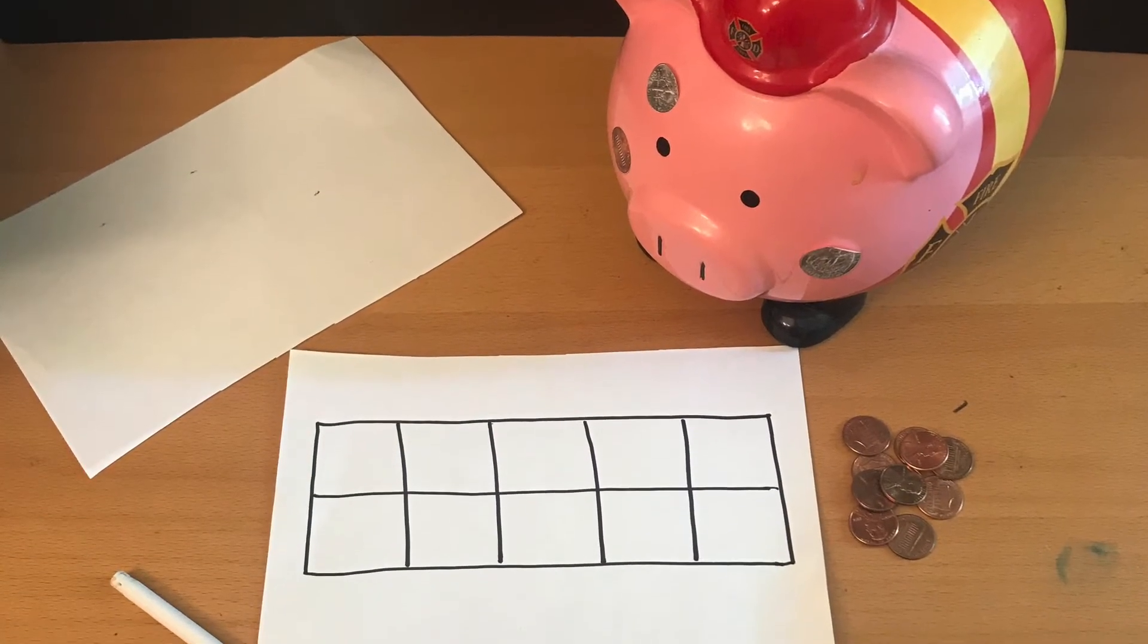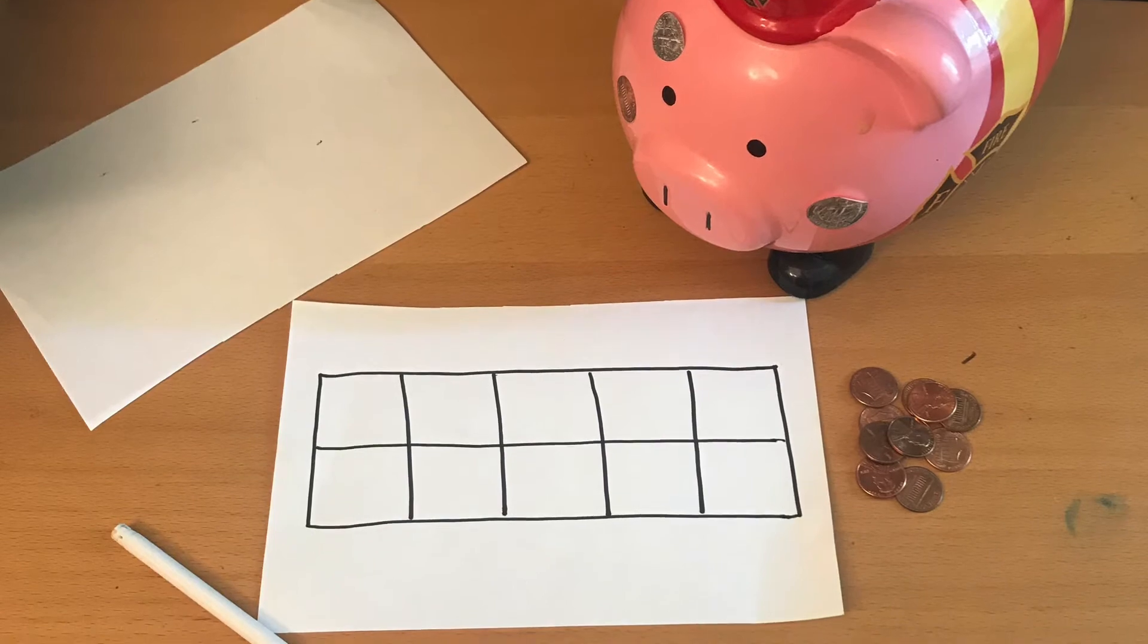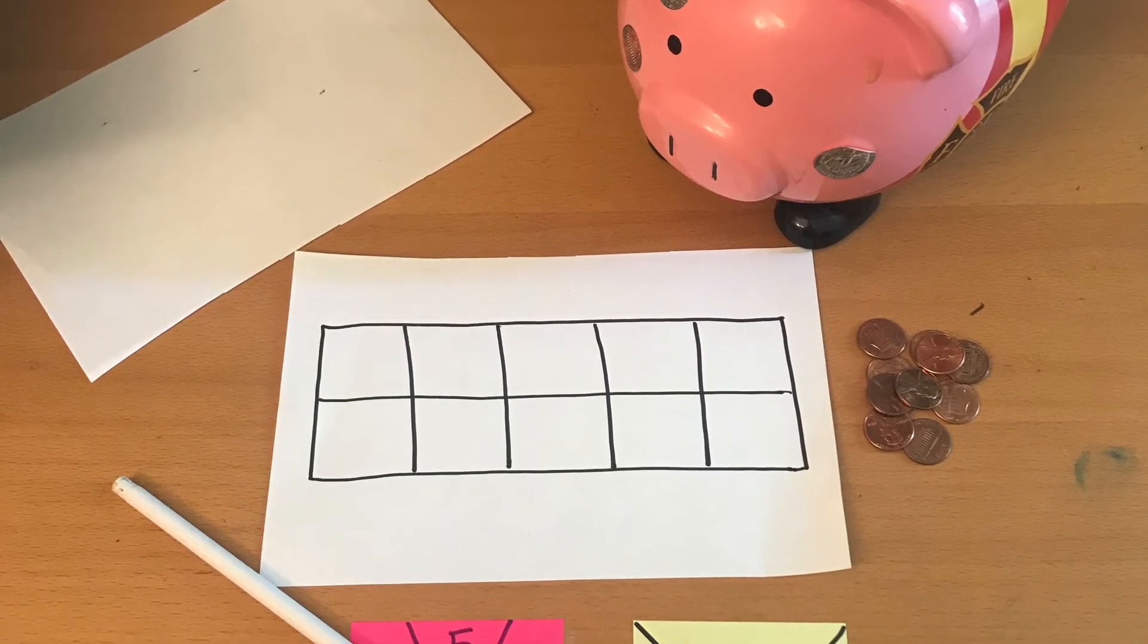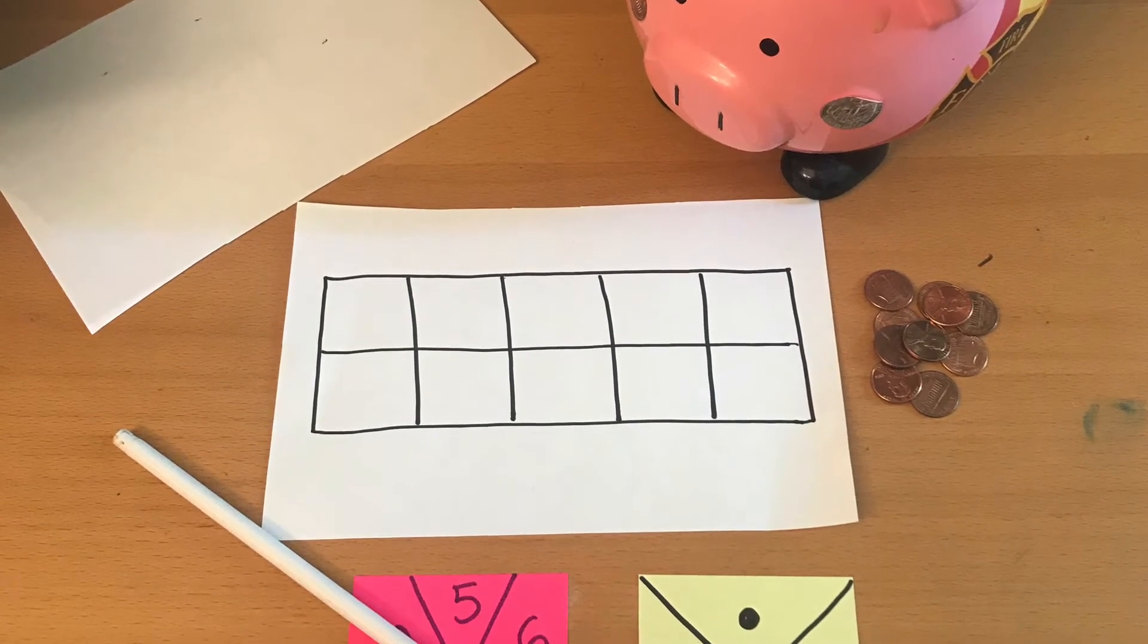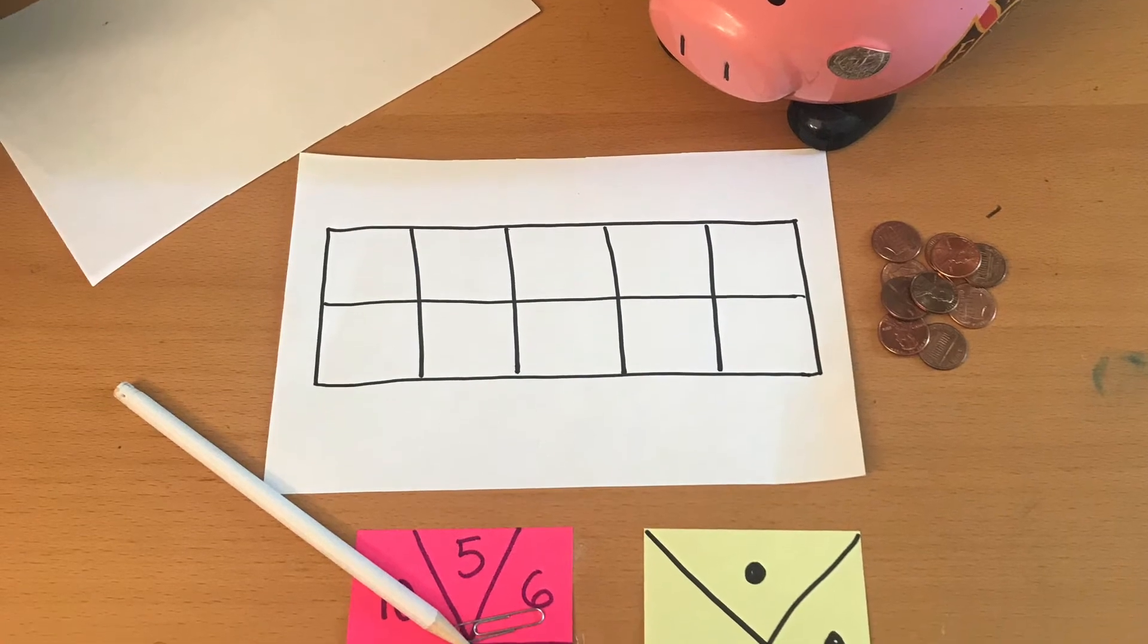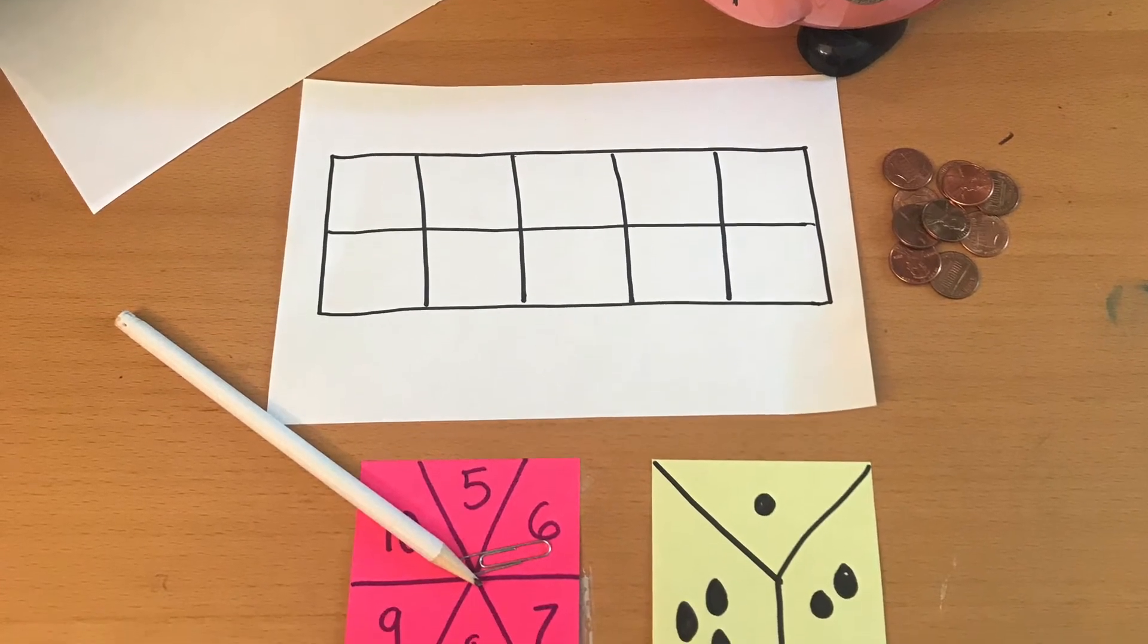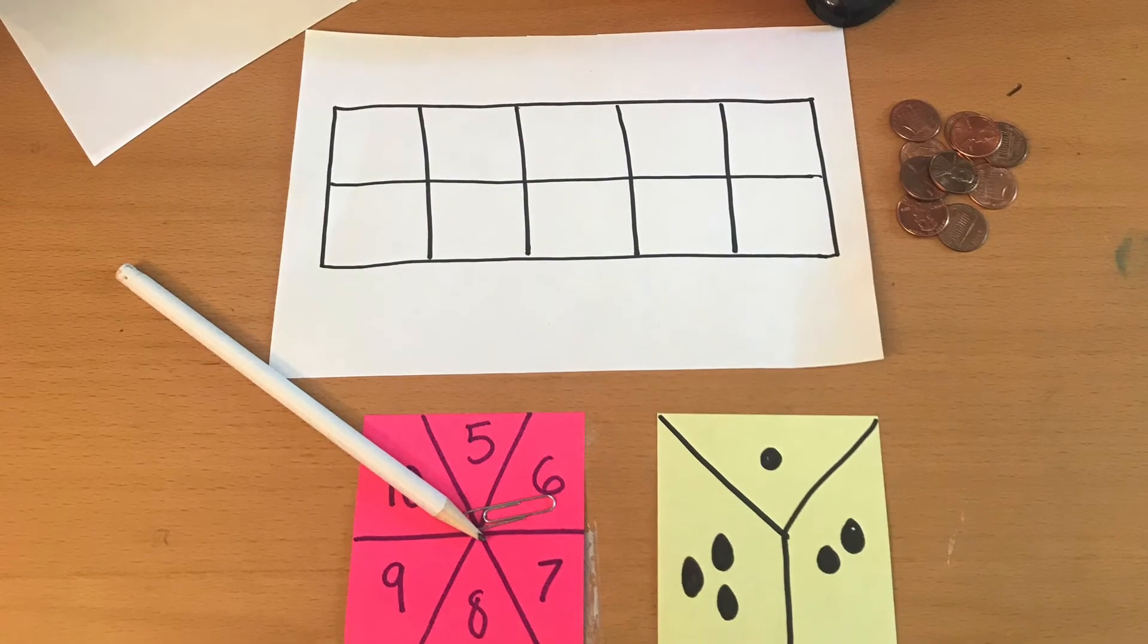So here's what you'll need to play. A piggy bank or cup, some paper and a pencil for recording, a 10 frame and some pennies or other coins, and then two spinners, one with numbers 5 through 10 and the other with 1, 2, and 3 dots.